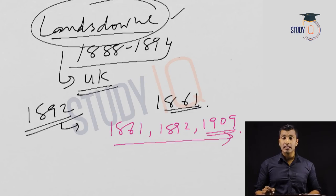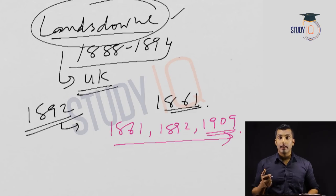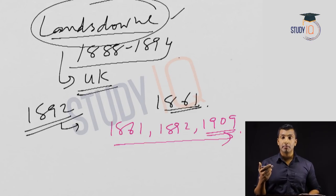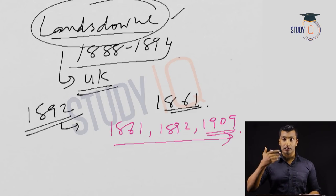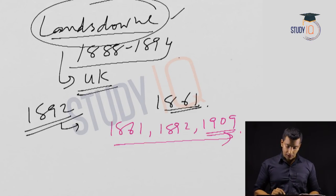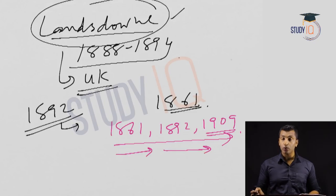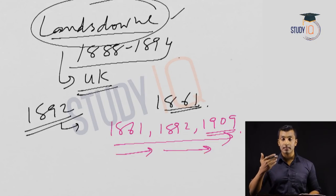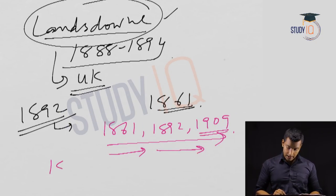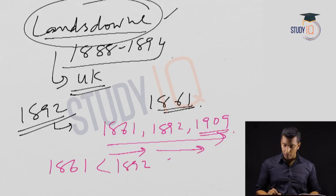In these acts, the number of members in the legislative assemblies was steadily increased from 1861 to 1892 and then to 1909. So the number of members in the legislative assemblies kept increasing — more in 1861, then more in 1892, then more in 1909.